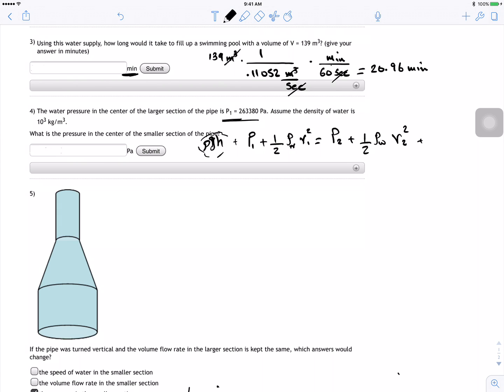Okay, so P1 is going to be what they gave us—263,380 plus half thousand times V1 squared, which is 0.88 squared, equals P2 plus half thousand times 4.34 squared. And then you just do the math and then you get P2 equal to 254,349.4 Pascals.